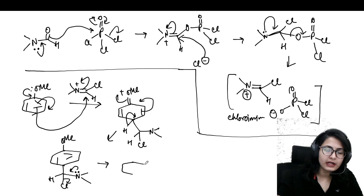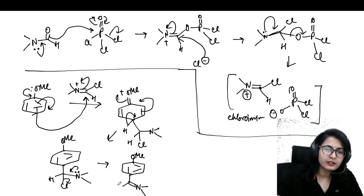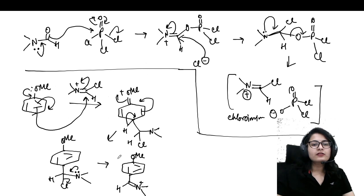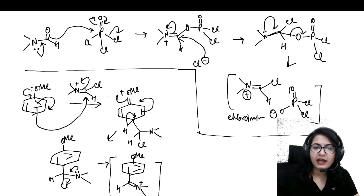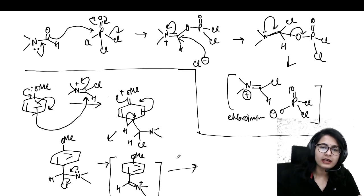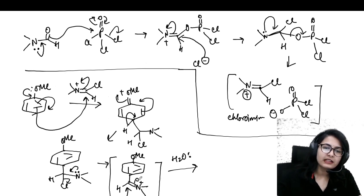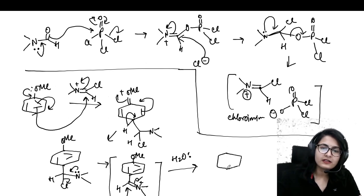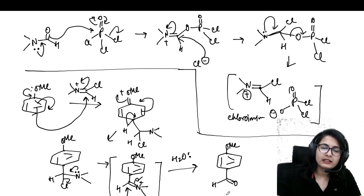The nitrogen can use its lone pair to remove the Cl- from the intermediate, giving you the iminium ion. Nitrogen uses its lone pair to form the iminium ion. This final iminium ion on hydrolysis gives your product — a CHO group.